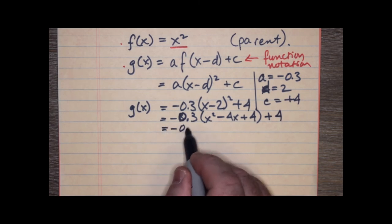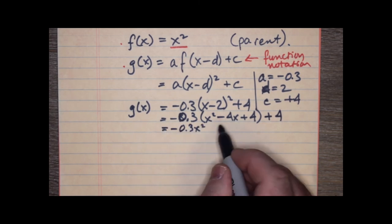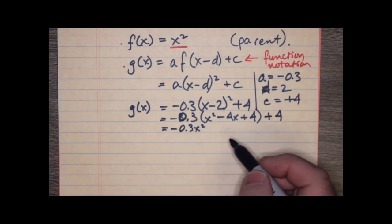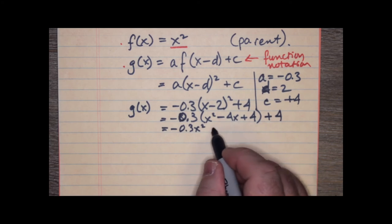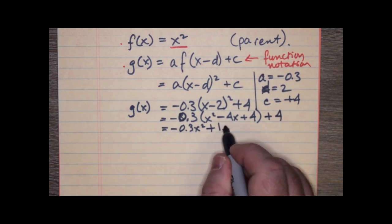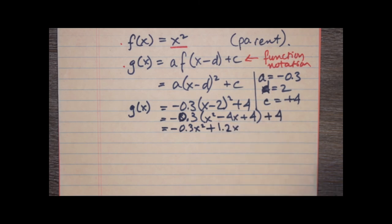So, we end up with negative 0.3x squared. Now, what's negative 0.3 times negative 4? I think it's 1.2, so it's going to be positive 1.2, because a negative times a negative is a positive. So, it's positive 1.2x.